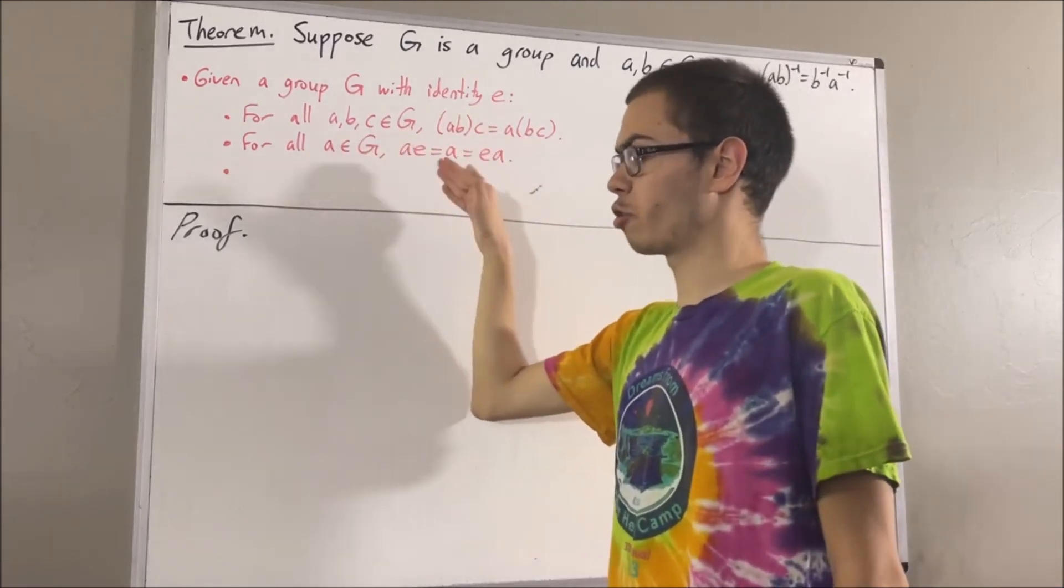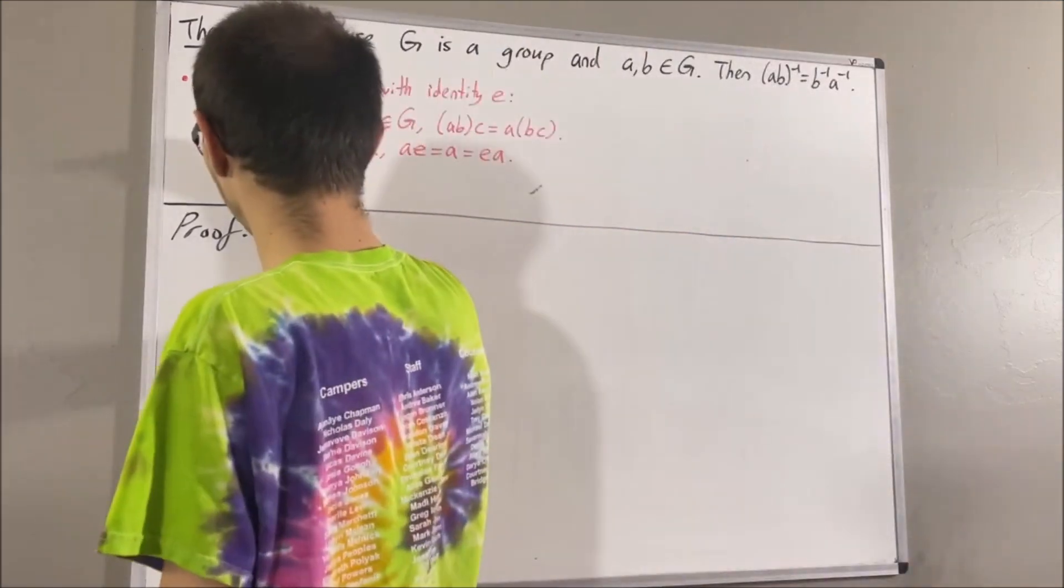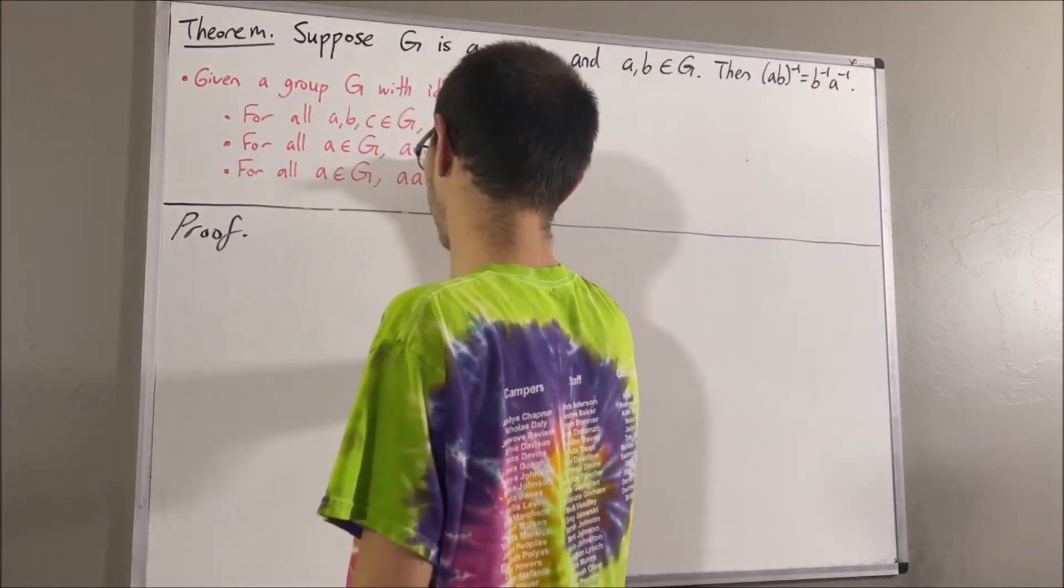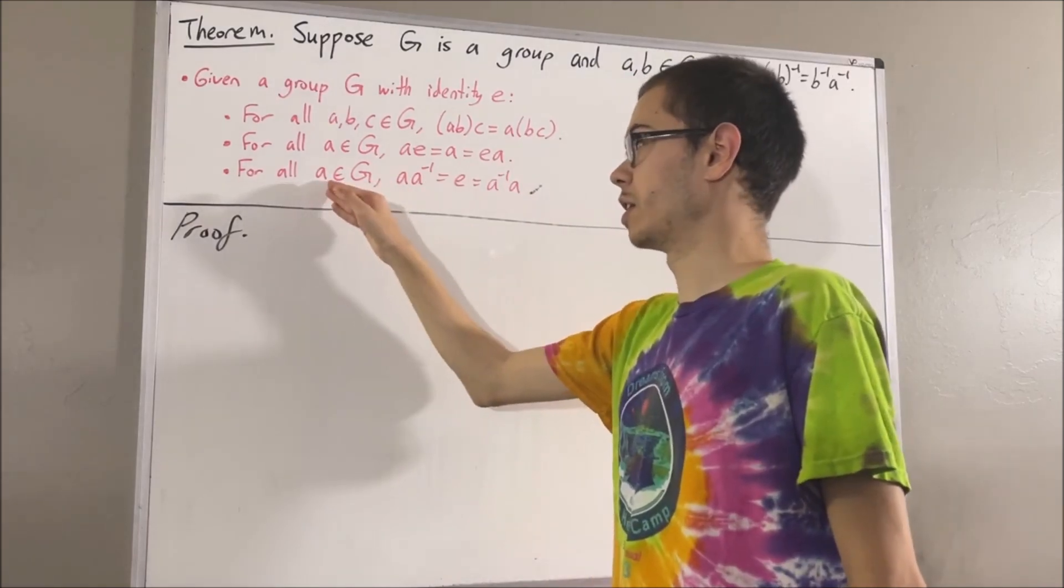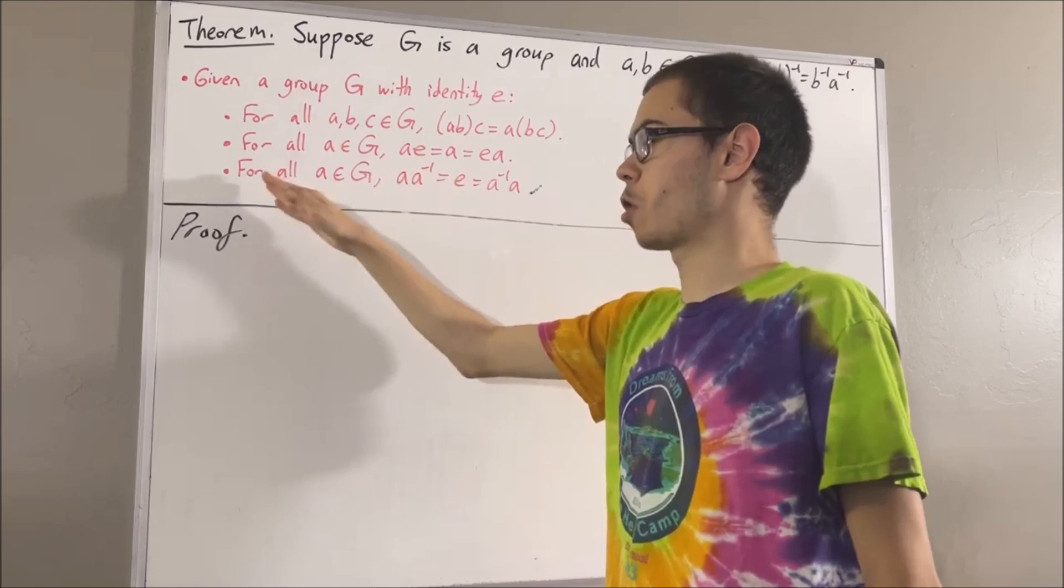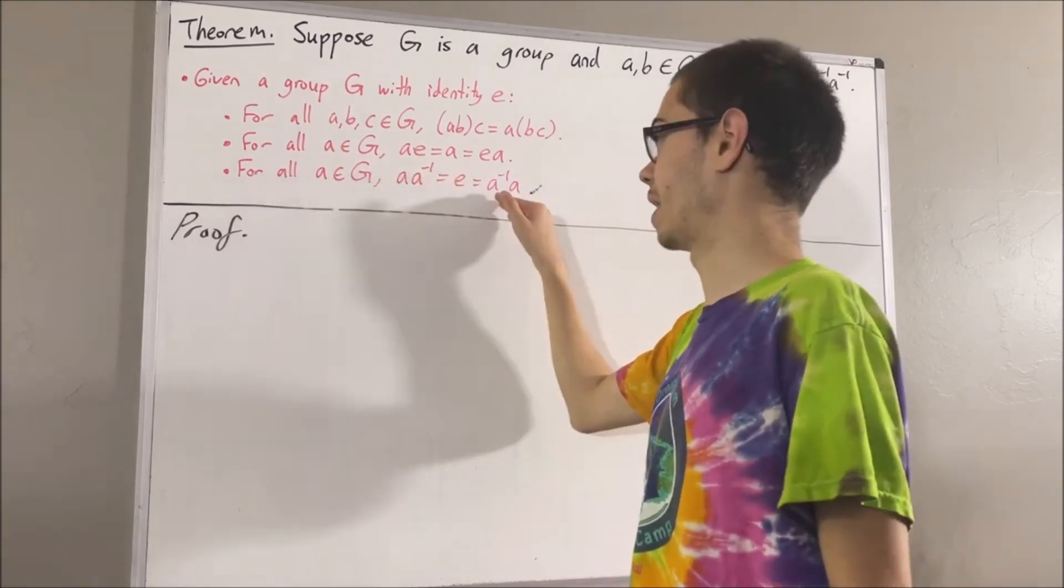And the third property comes from the definition of the inverse of an element. The inverse of the element A is denoted A to the power of negative one, and we have, for all elements A in G, A times A inverse is equal to E, which is equal to A inverse A.